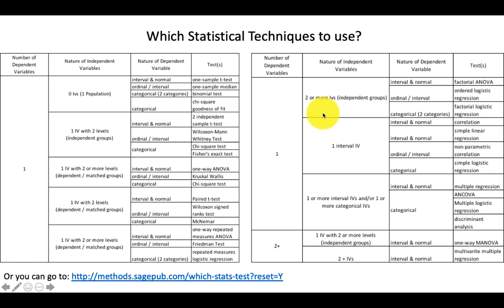You can also go to websites that will tell you what statistical test you need to use. But basically, it's simple — you just need to remember whether you want to test for mean differences, whether you want to test for association, or whether you want to test the predictive nature of one variable on another. That's it. I'll see you guys in our next series next week. Thank you very much.